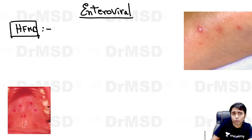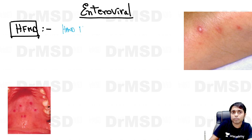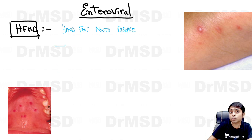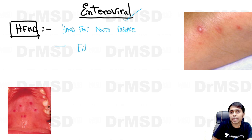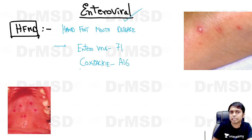Coming to the question: HFMD — hand, foot, and mouth disease — is an enterovirus-associated condition. The causative viruses are Enterovirus 71 and Coxsackie A16. These are the viruses associated with hand, foot, and mouth disease.